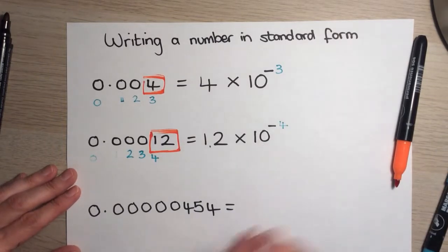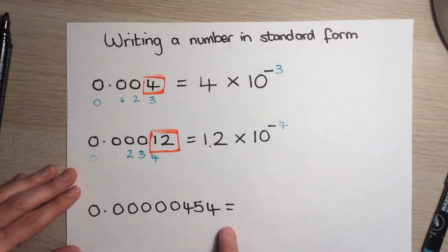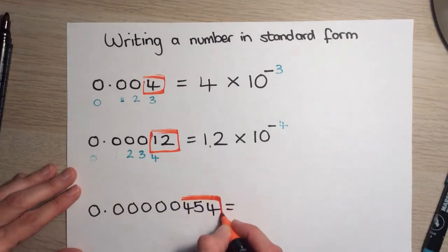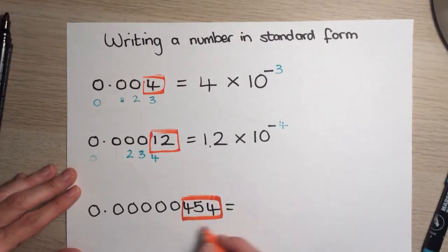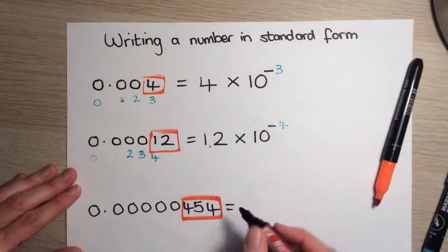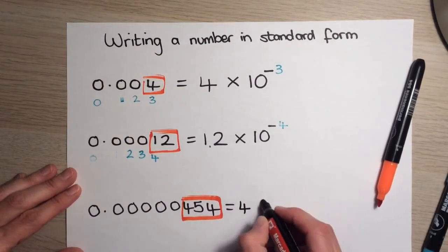Okay. Final example. So, quite a big long number. 0.0000000. First digit that's not a 0 is a 4. I'm going to put a box around all the things that are not 0. And then I'm going to write those after the equal sign.